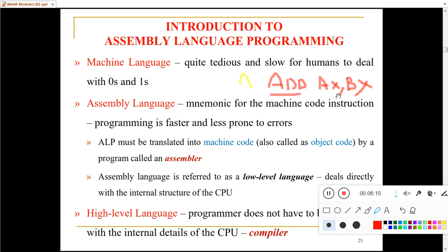Please remember: the mnemonic indicates what type of operation is carried out on operands. An assembler is a software which converts an assembly language program into machine language.